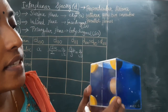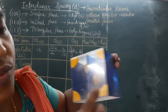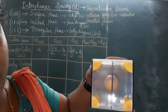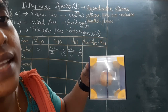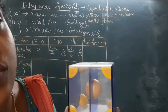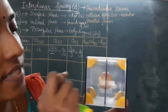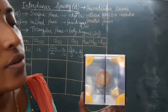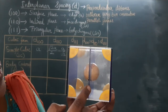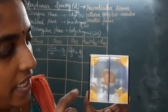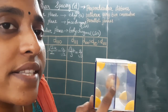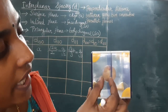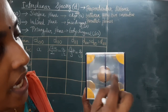First, we can consider the surface planes, that is the 100 family in the body centered cubic structure. How many 100 planes are possible? One is here, second is here, and the third one is along the center of this body. So planes 1, 2, 3 are possible. The perpendicular distance between two adjacent parallel planes will be the edge A divided by 2. So D(100) for BCC = A/2.